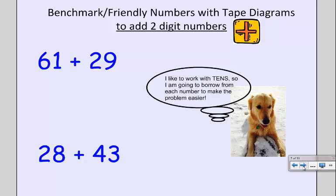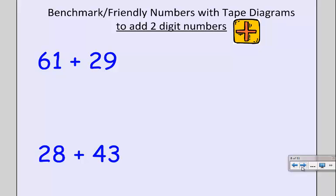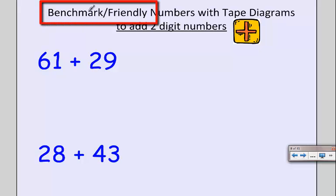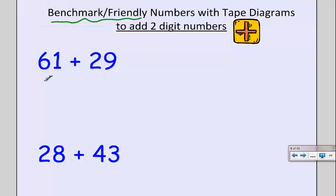Let's check out 61 plus 29. Here's our basic idea: 61 is really close to a friendly or benchmark number. It's really close to the number 60. It's made up of 60 and 1.